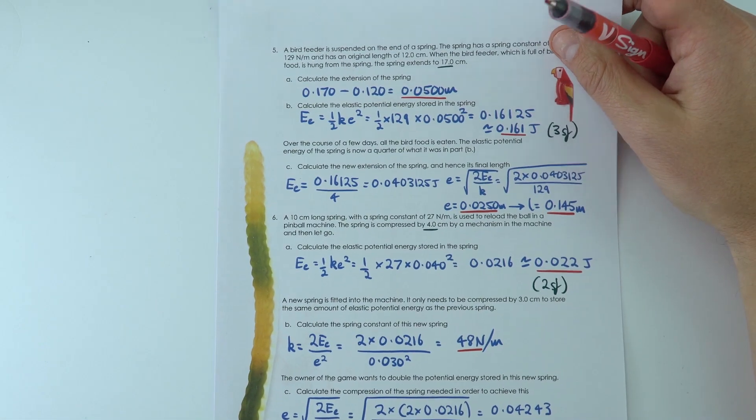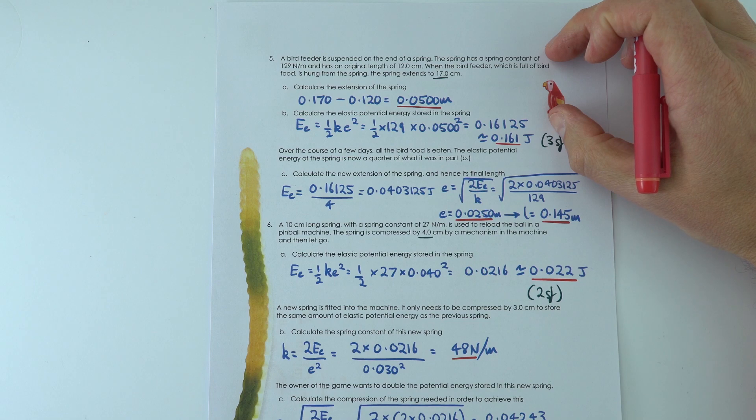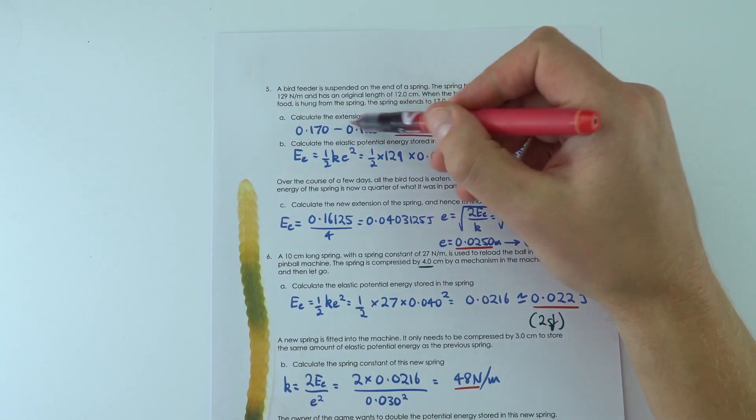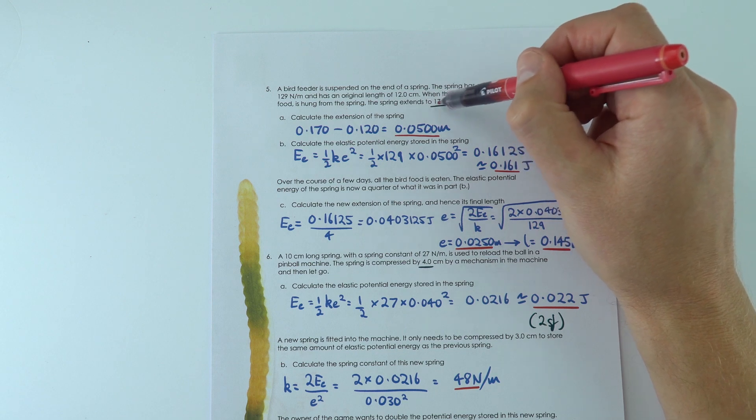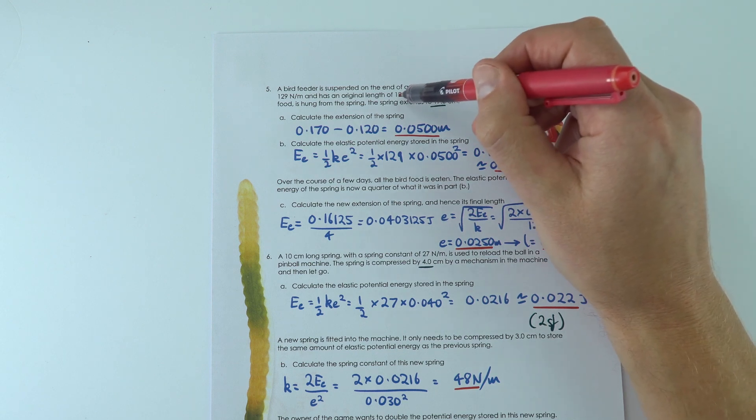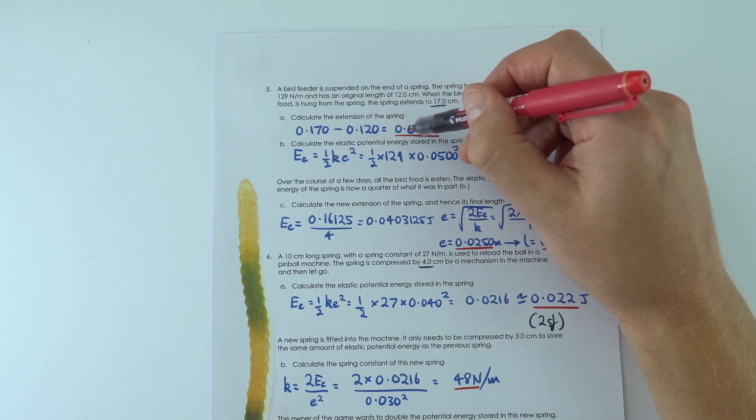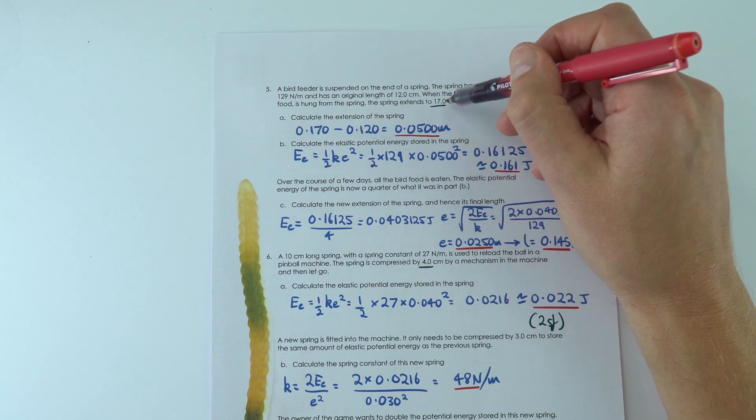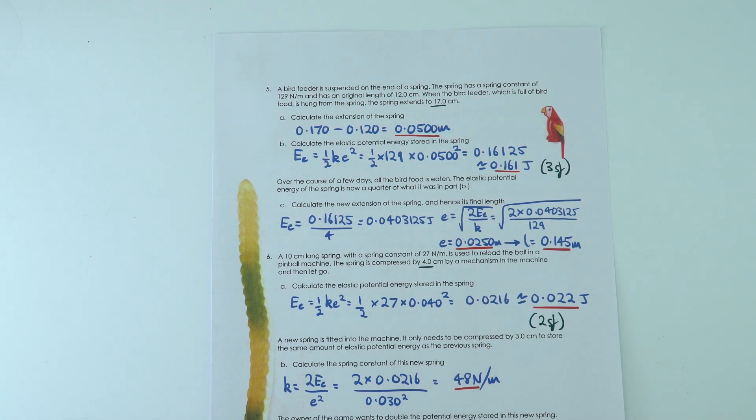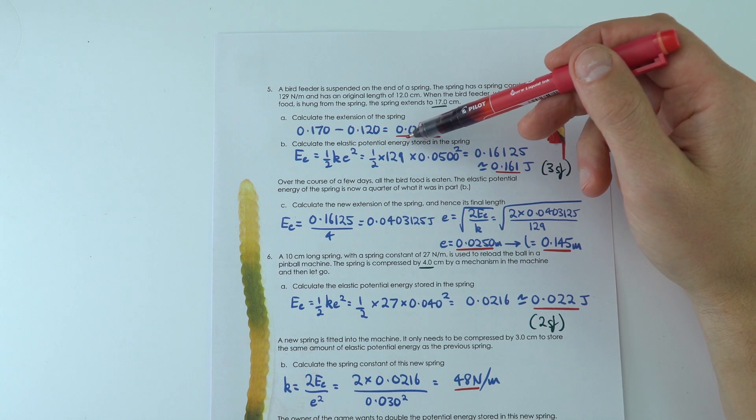On the other side, we've got some questions about maybe a bird feeder where as a bird sits on the bird feeder it extends. The extension is not the length, so it says here the spring extends to 17 centimeters when initially it was at 12. So the extension is five centimeters, which is 0.0500 meters. I've given that to three significant figures like the raw data.